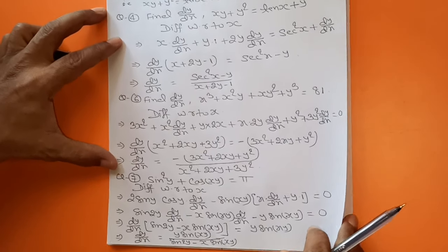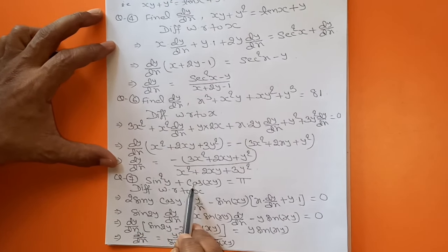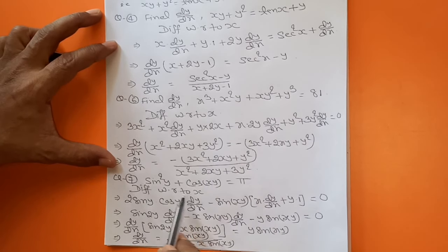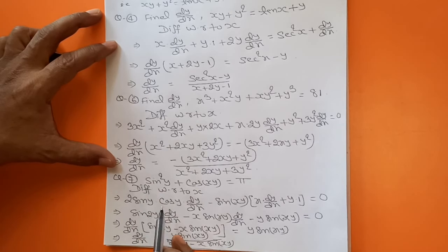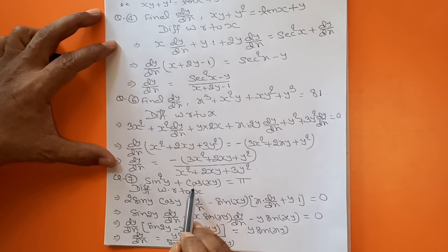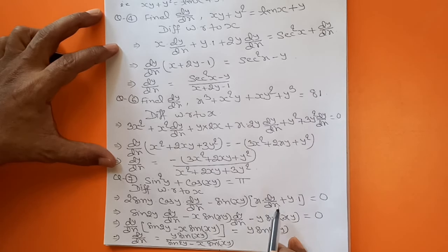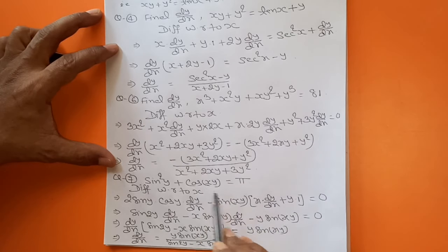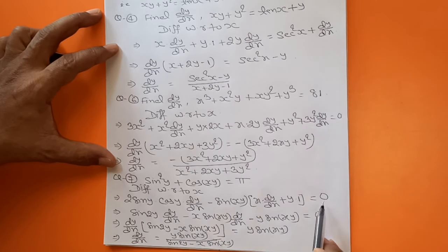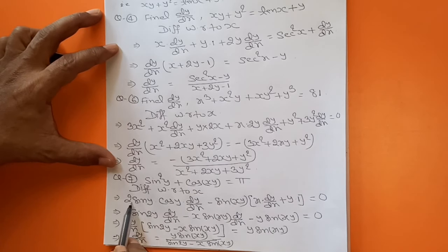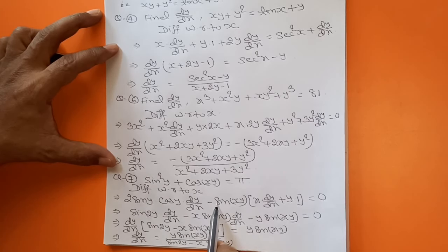Now question number 7: sin²y + cos(xy) = π. Differentiate with respect to x. For sin²y: 2 sin y · cos y · dy/dx. For cos(xy): differentiation of cos is −sin(xy), and we have two functions x and y inside, so first function x, differentiation of y is dy/dx, plus second function y, differentiation of x is 1. Differentiation of constant π is 0. Using the formula, 2 sin y · cos y = sin 2y, so we get sin 2y · dy/dx.